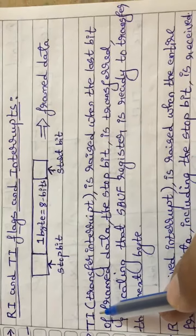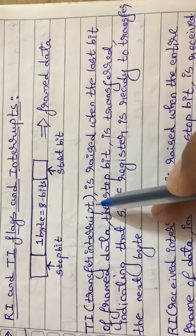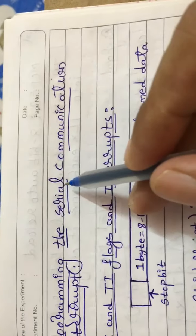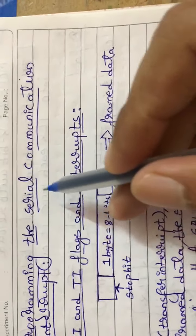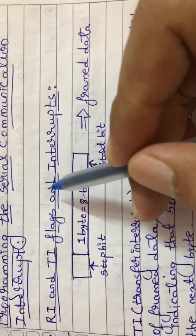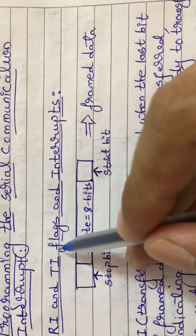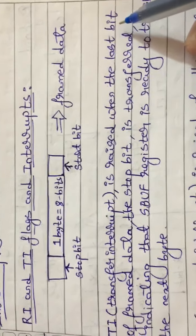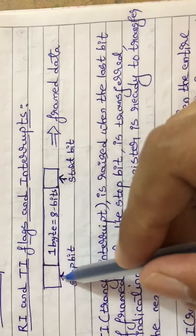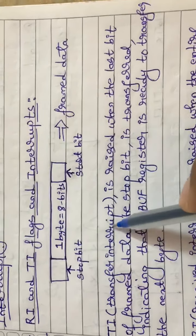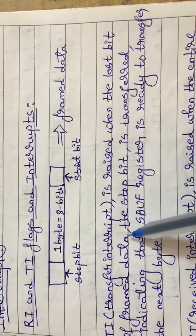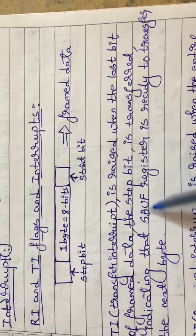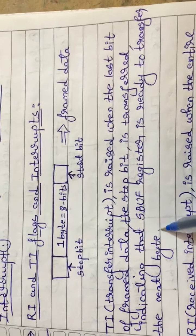TI stands for Transfer Interrupt. Under serial communication we have two interrupts — Received Interrupt and Transfer Interrupt — which work hand in hand. Transfer Interrupt is raised when the last bit of framed data, that is the stop bit, is transferred, indicating that the SBUF register is ready to transfer the next byte.